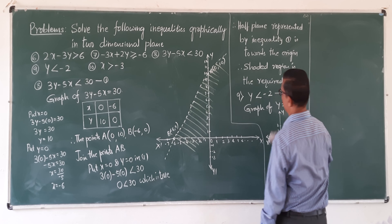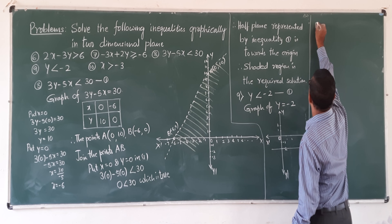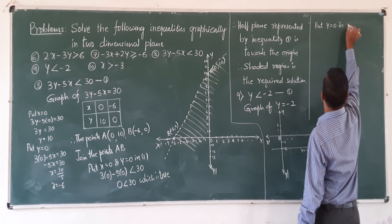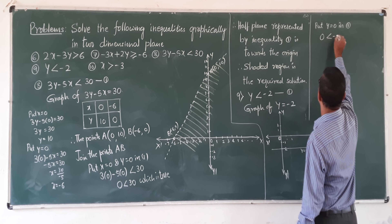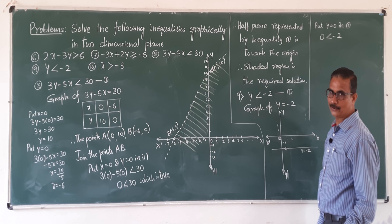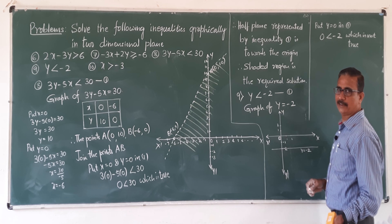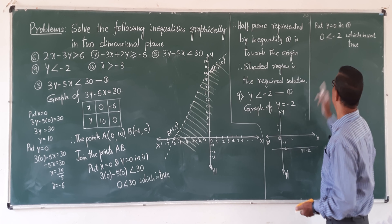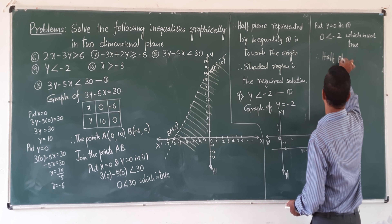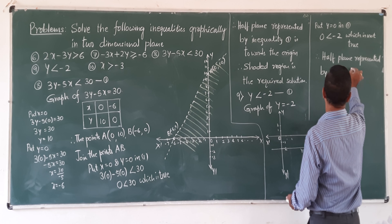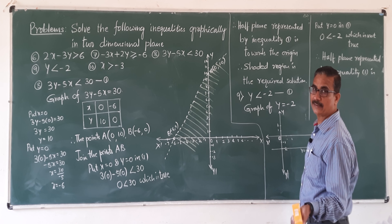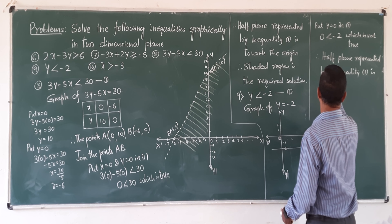Now, since there is no x variable, put y equal to 0 in the given inequality: 0 less than minus 2. Is 0 less than minus 2? No, which is not true. Therefore, the half plane represented by the given inequality is away from the origin, because it does not satisfy. Away from the origin means downward.